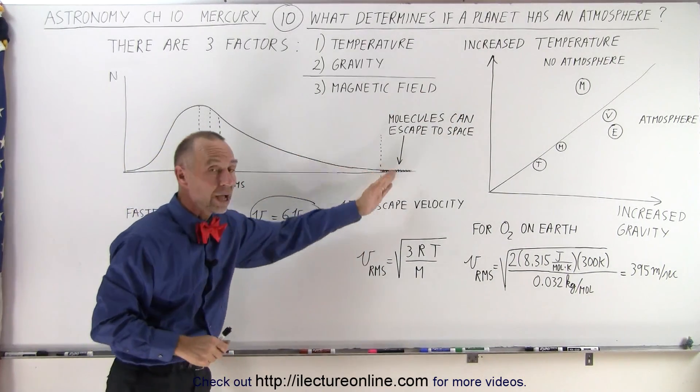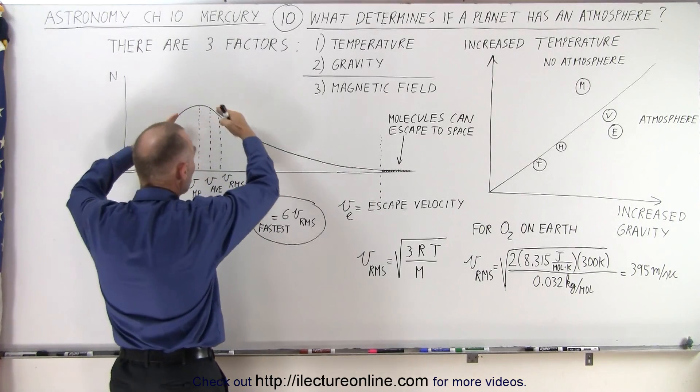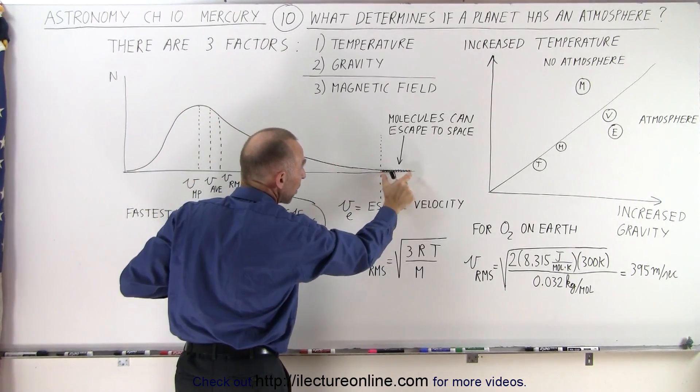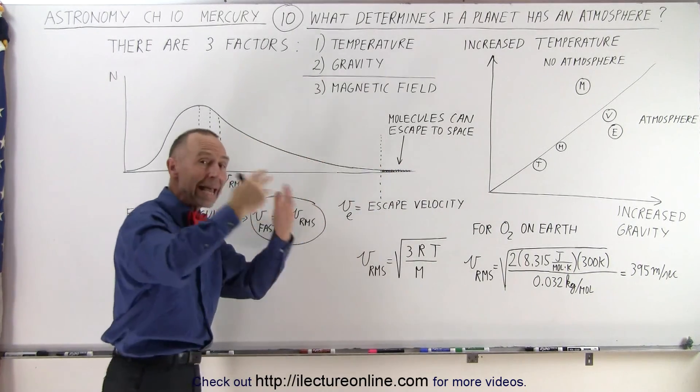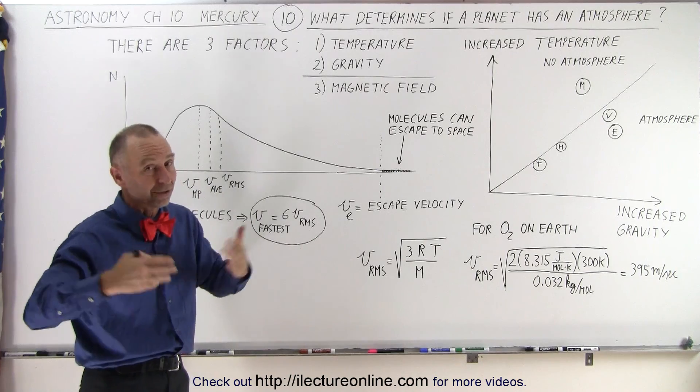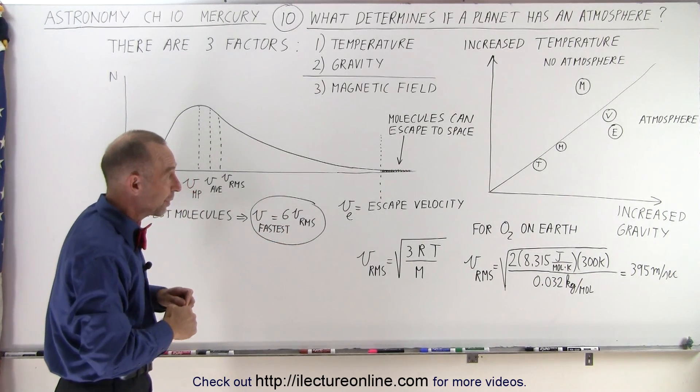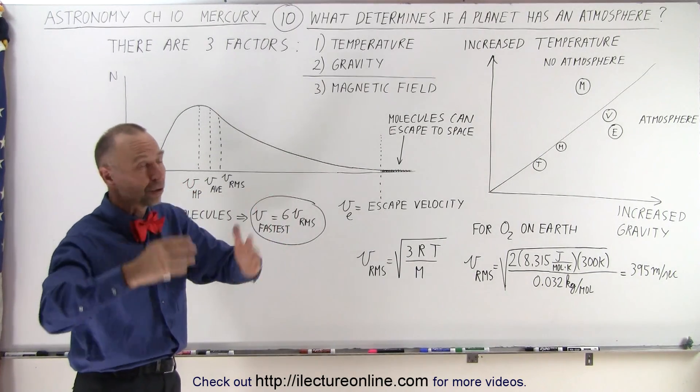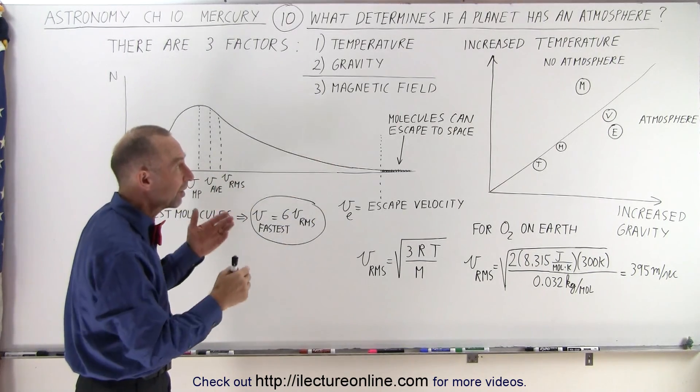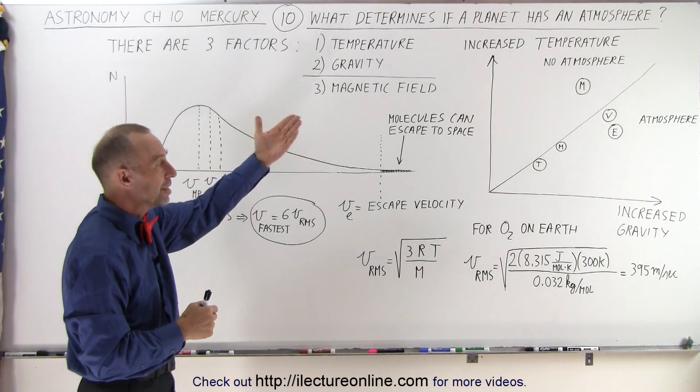Once those molecules are gone, the whole distribution will resettle itself and will always keep a certain number of these molecules past escape speed, and they will continue to leave the planet. And over the billions and billions of years, because the solar system is about four and a half billion years old, the molecules will simply disappear, and the atmosphere will leave off into space, leaving Mercury virtually nothing left.